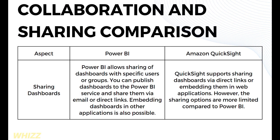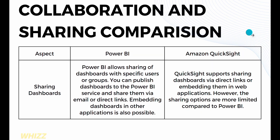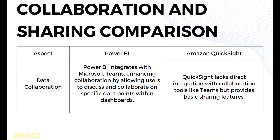In terms of sharing dashboards, Power BI allows sharing with specific users or groups. You can publish dashboards to the Power BI service and share them via email or direct links, and embedding dashboards in other applications is also possible. Amazon QuickSight supports sharing dashboards via direct links or embedding them in web applications. However, the sharing options are more limited compared to Power BI. Power BI also integrates with Microsoft Teams, allowing users to discuss and collaborate on specific data points within dashboards, while Amazon QuickSight lacks direct integration with collaboration tools like Teams.